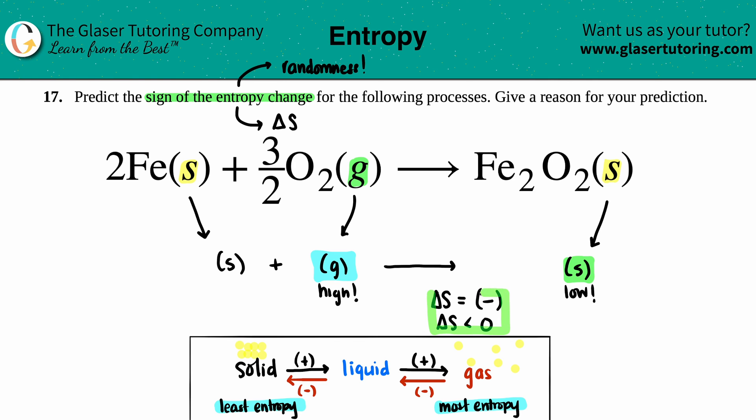You could also say that the delta S could be less than zero, but since they wanted the sign, I would say that the delta S being a negative value would be more correct because that's an actual sign. And that's it.